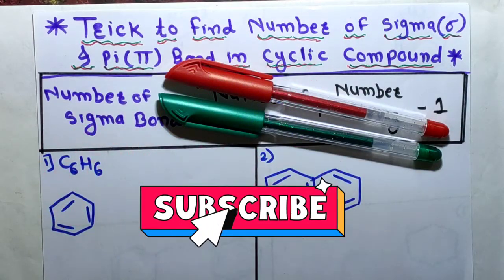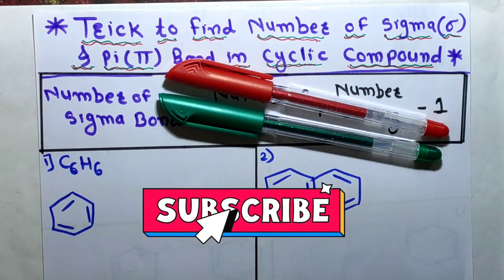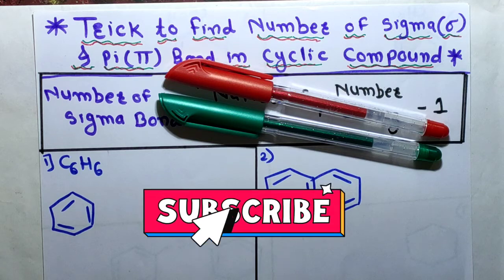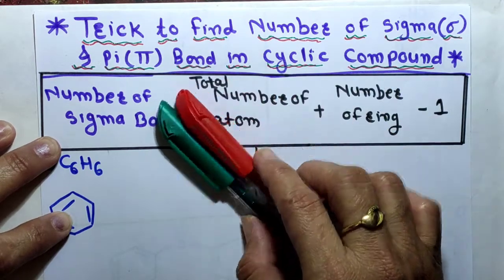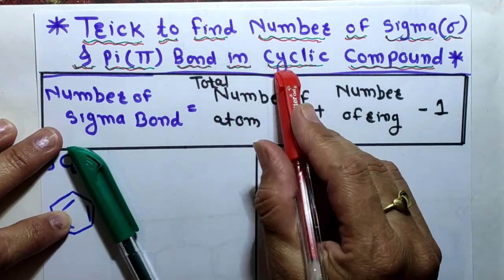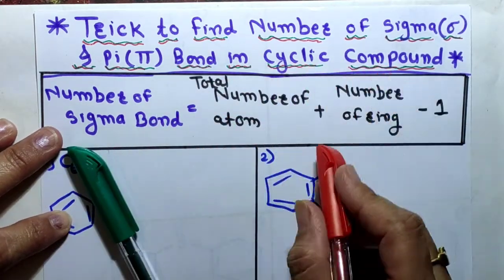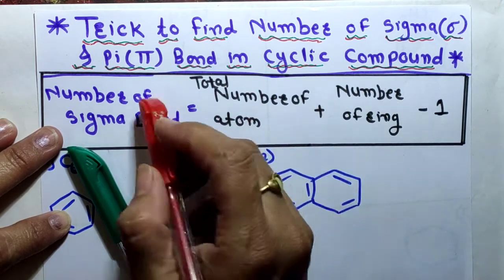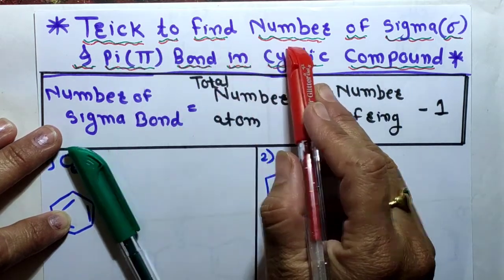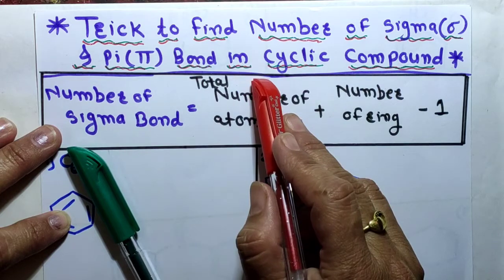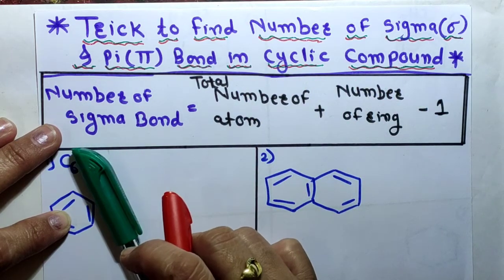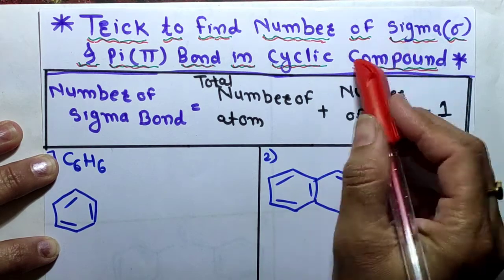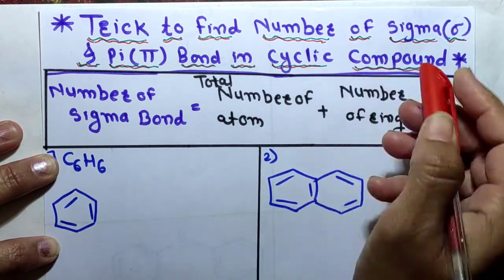Hello students, welcome to my channel. In this channel I will teach chemistry and maths in the simplest way. I am Jyothi ma'am. Today our topic is: trick to find the number of sigma and pi bonds in cyclic compounds. In one of my previous videos I discussed the trick to find the number of sigma and pi bonds in open chain compounds. Now let's start the session.